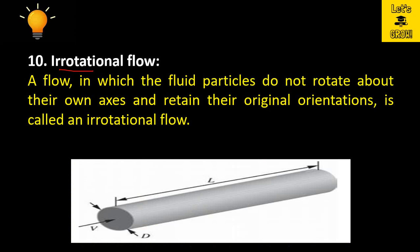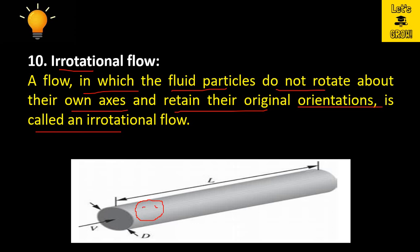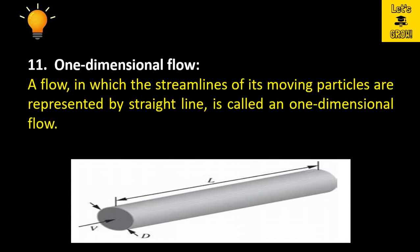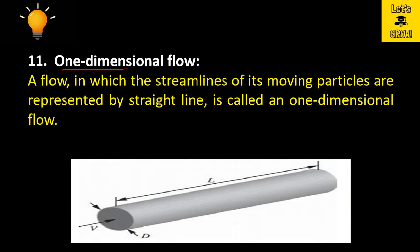A flow in which the fluid particles do not rotate about their own axis and retain their original orientation is called irrotational flow. If the fluid particles do not possess angular velocity, they will not rotate and will retain their original orientation. For example, if a water particle is at one position with a certain orientation and moves to another position with the same orientation, that flow is irrotational flow.